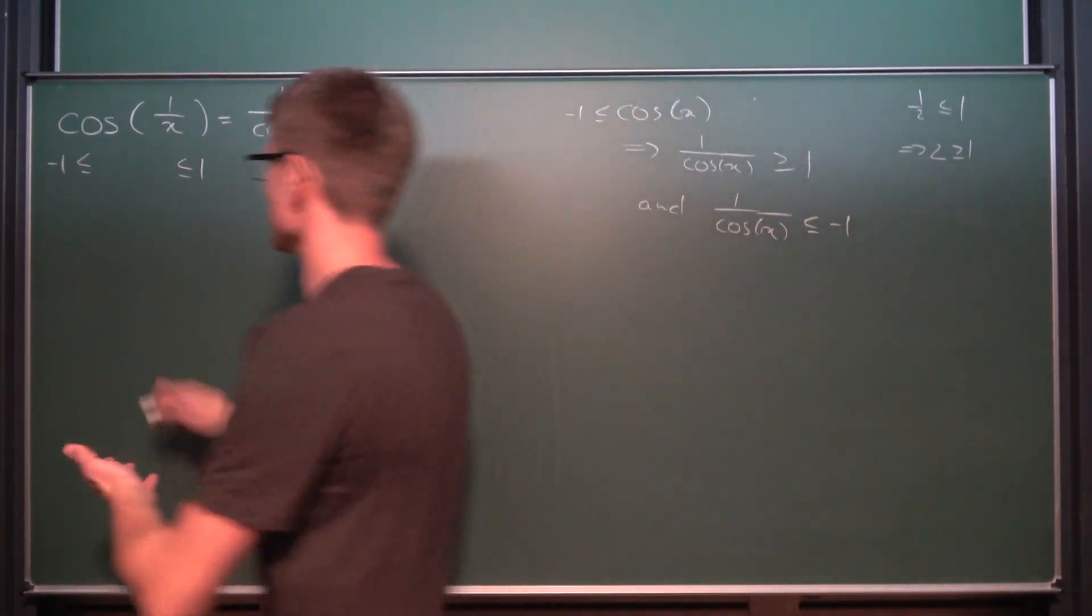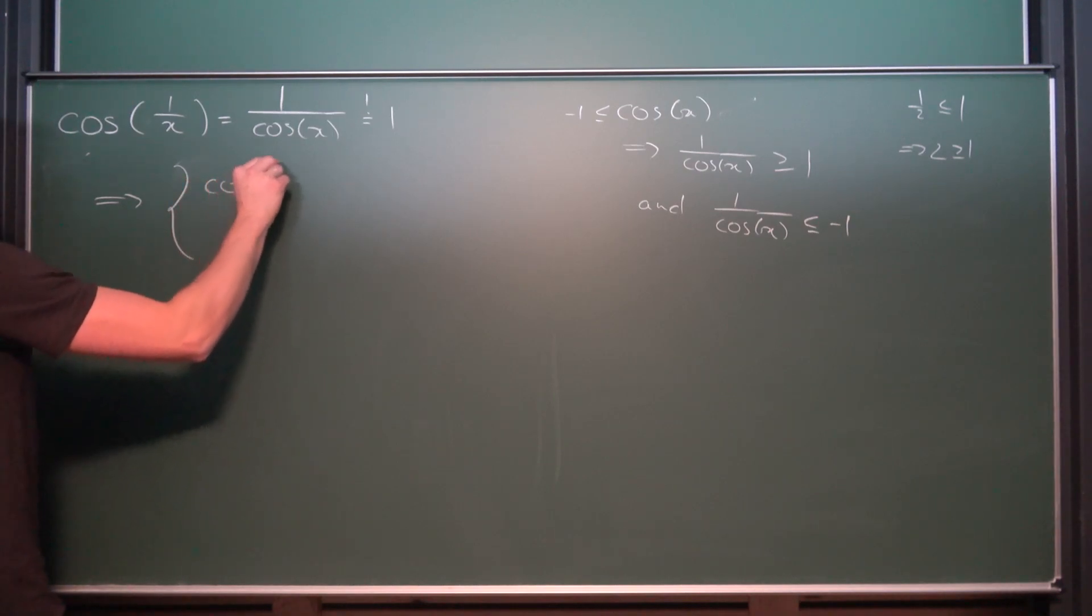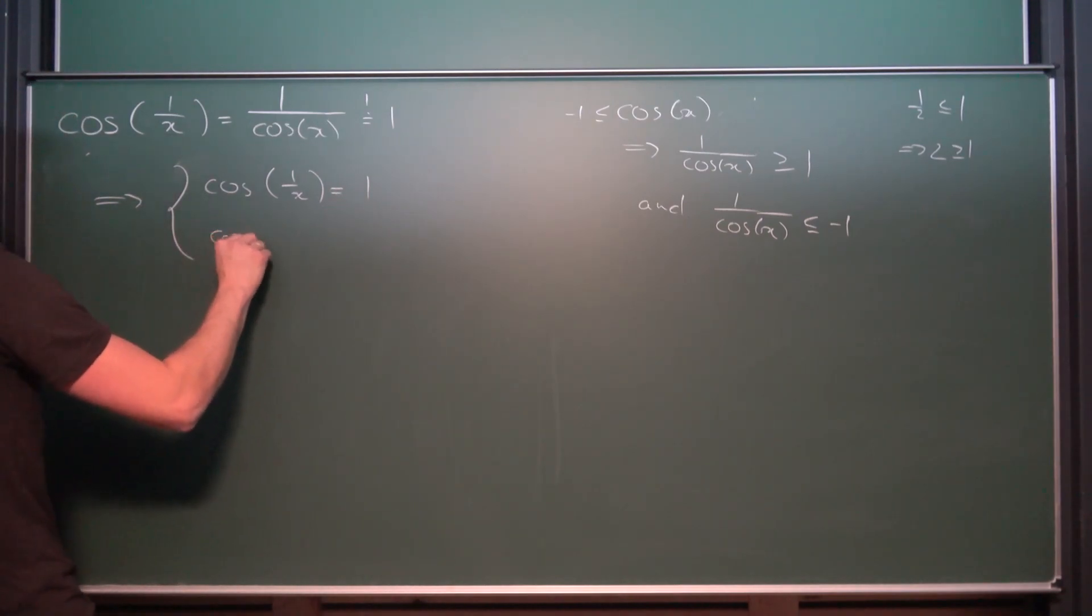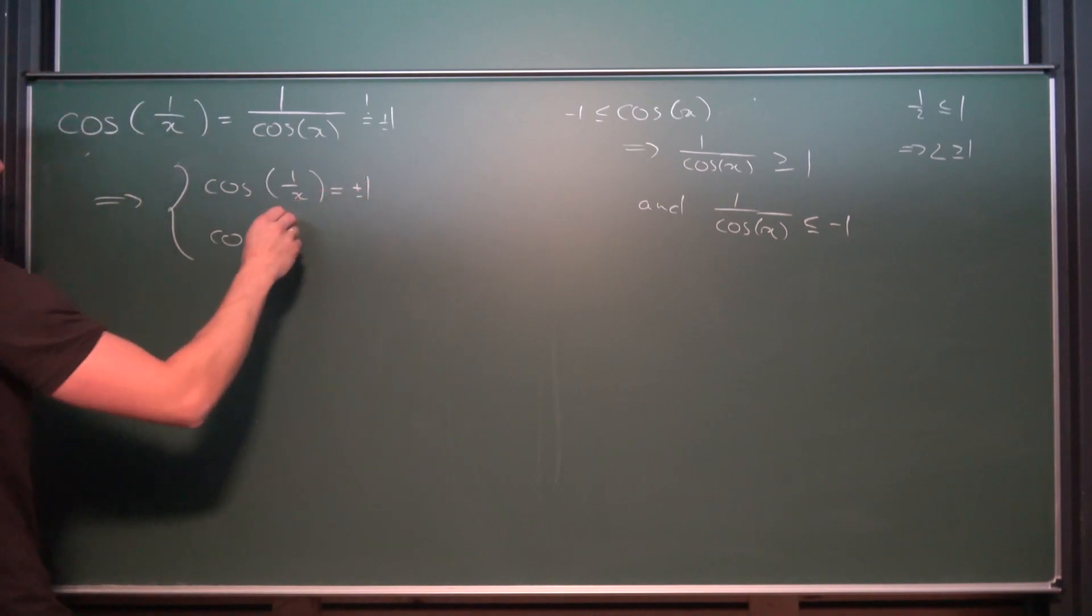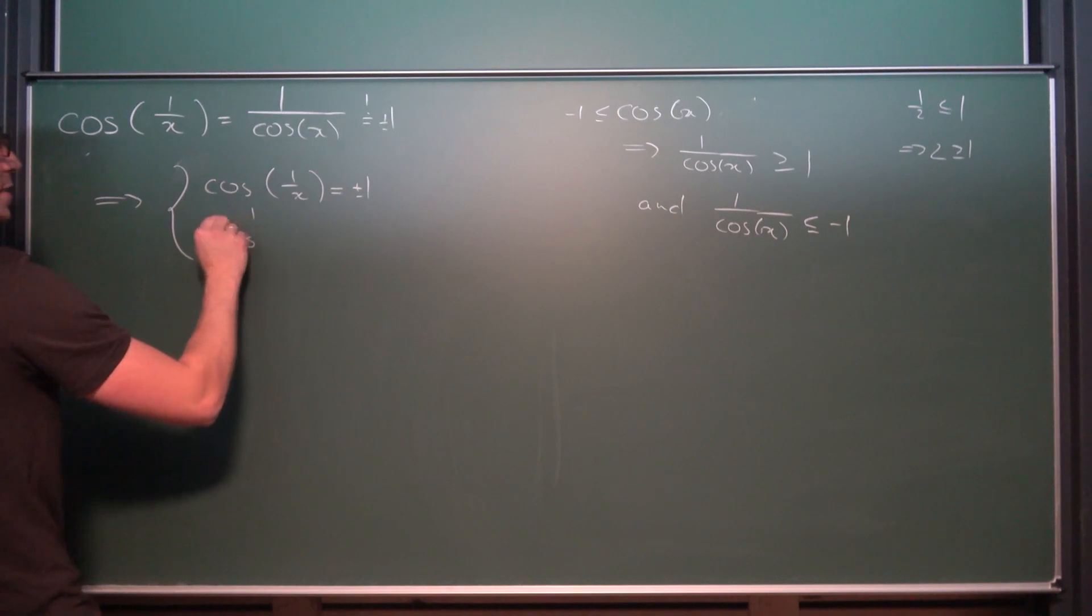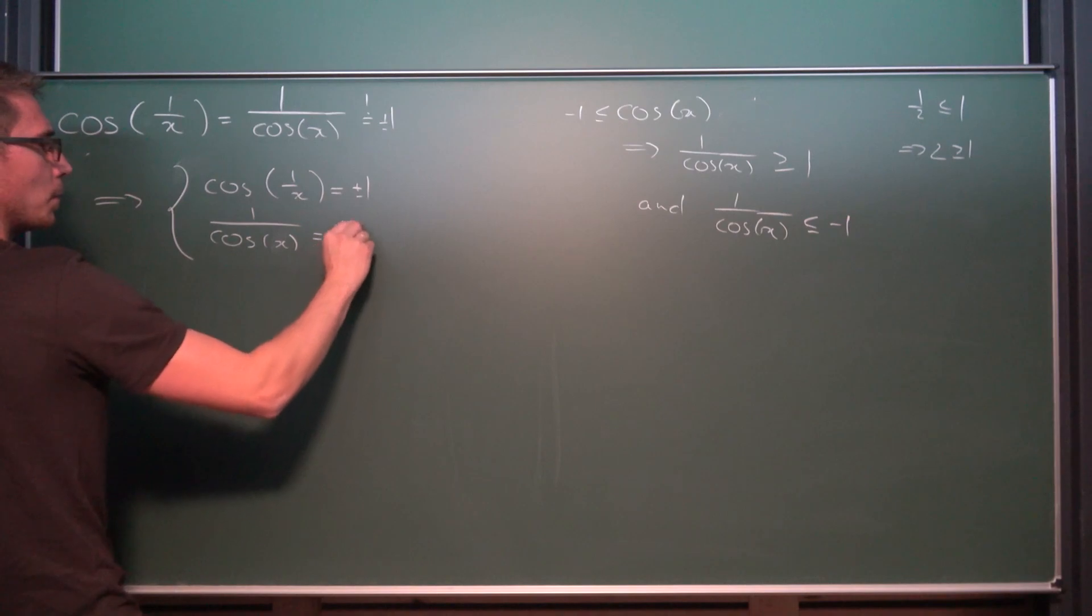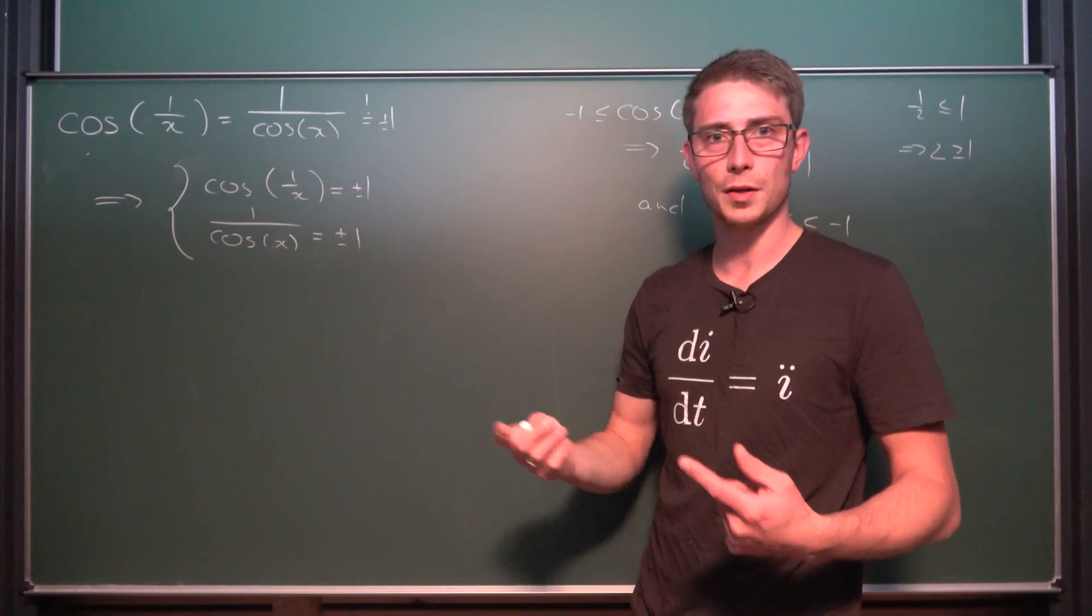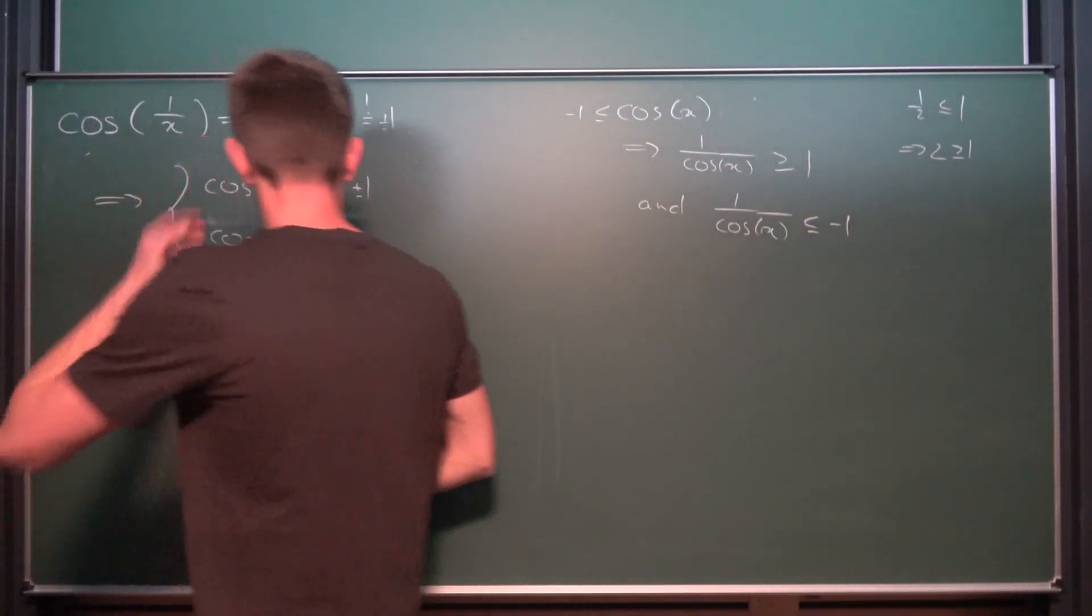So this whole thing can only work out if both of those are equal to 1. And this gives us a system of two equations basically. Namely, that the cosine of 1 over x is equal to plus or minus 1. And 1 over the cosine of x is equal to plus or minus 1. And 1 over the cosine of x being equal to plus or minus 1 just gives us the same thing if we take the reciprocal. So we can just take this away.